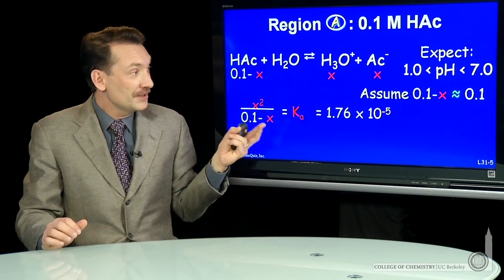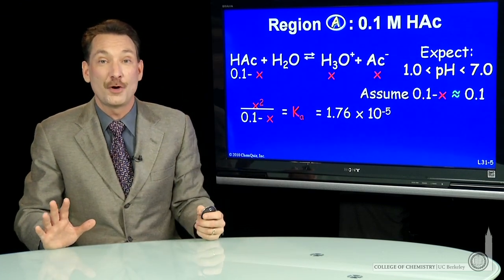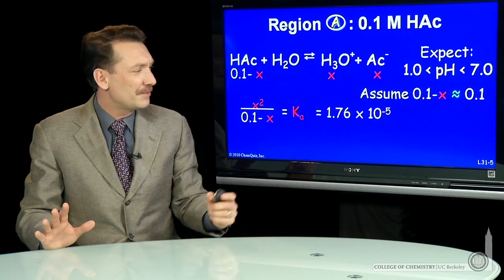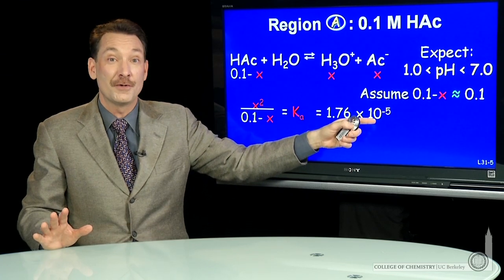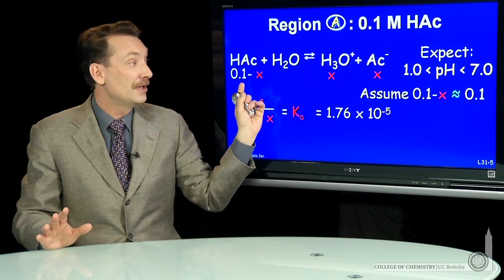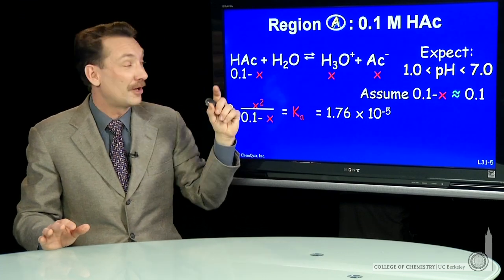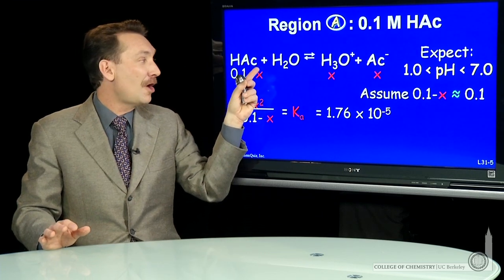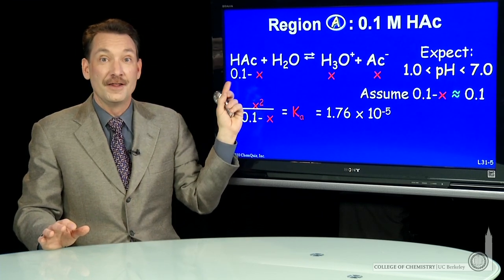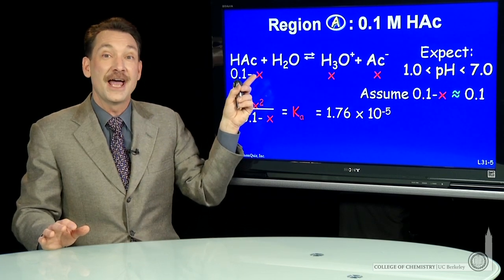Now, to solve for x, the easiest thing to do is assume that x is small with respect to 0.1. And I do that because I see that Ka is a relatively small number. And if Ka is small, then this reaction doesn't go very far, and x should be small. I should favor this side, the 0.1 side. So if only a small fraction of the 0.1 initial moles react, x will be small.